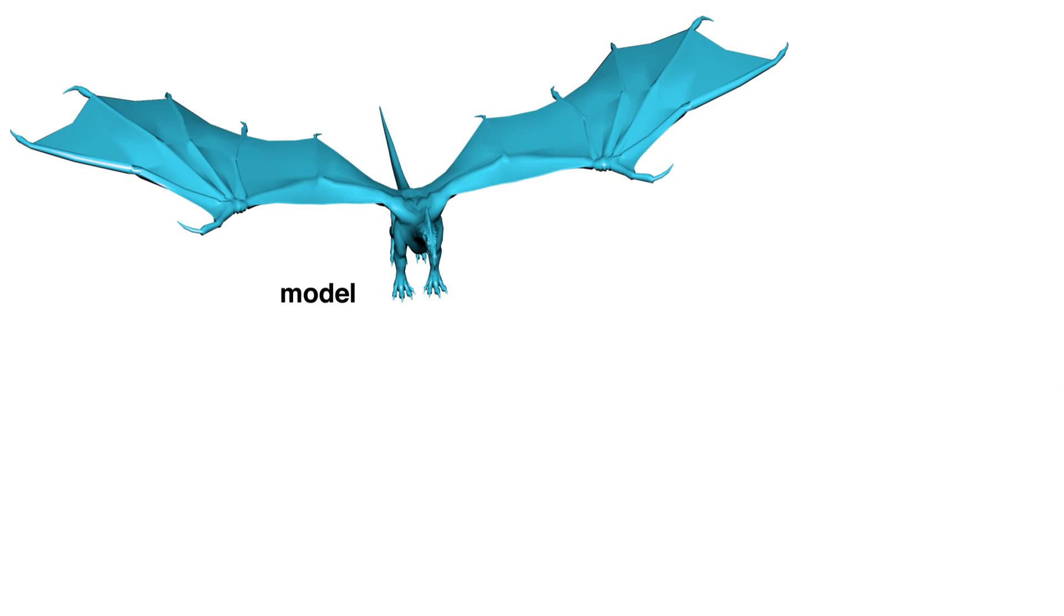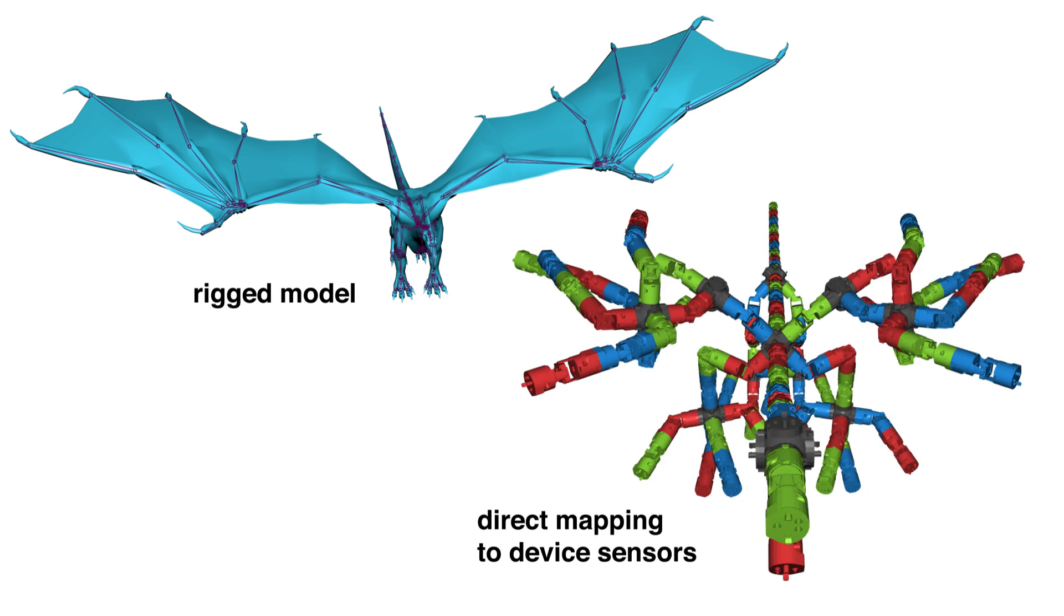Character rigs often consist of more than 100 bones, and therefore a direct mapping from the device's sensor to the rig's degrees of freedom is not possible due to the resulting size of the device and the limited amount of parts available.